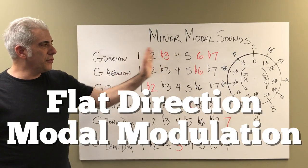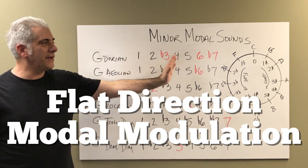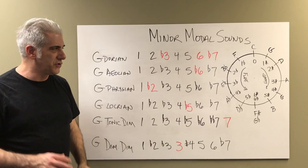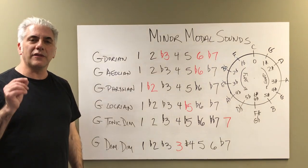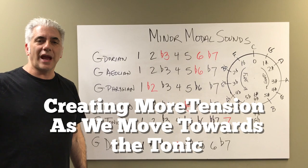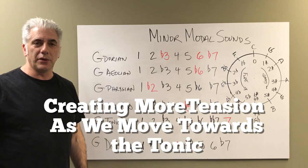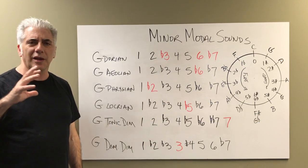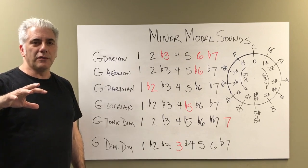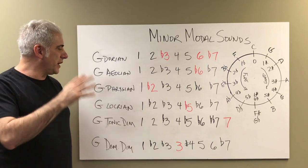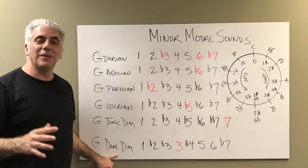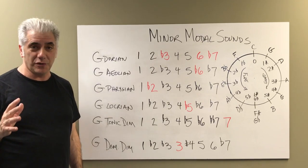I'm going to show you how we're going to use both modal modulation and modal mixture — modal modulation because we're actually moving around the circle of fifths, but modal mixture because we're playing different modes over the same chord quality. In this case it'd be G minor. I'm going to show you sharp and flat direction modal modulation, and we're going flat direction to create more harmonic tension. I'm doing them in two-bar segments: G Dorian, G Aeolian, G Phrygian, G Locrian, G Tonic Diminished, G Dominant Diminished, and then we'll resolve to C major.